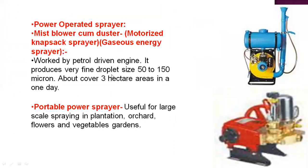There are also power-operated sprayers, such as the mist blower cum duster, or motorized knapsack sprayer, which is powered by a petrol-driven engine. It produces very fine droplets of about 50 to 115 microns in size, and the area covered is more than 3 hectares per day. The second type is the portable power sprayer, useful for large-scale spraying in plantations, orchards, flower gardens, and vegetable gardens.